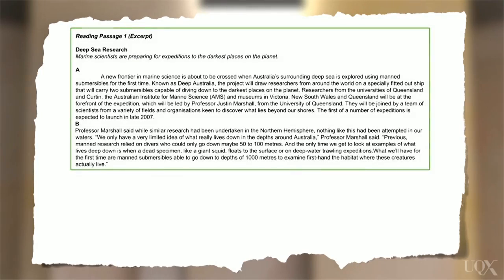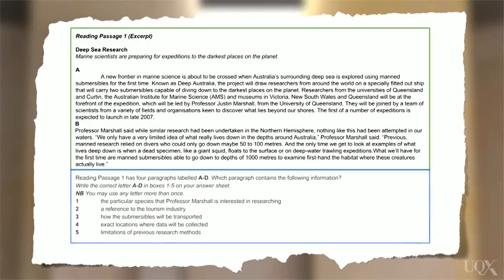A common question type in the IELTS reading test is locating information. With locating information questions, you need to read the text in order to find specific information, such as a reason, an example, or an explanation. Let's look at an example of this task now. On your test paper, you'll see a reading passage followed by the locating information questions.